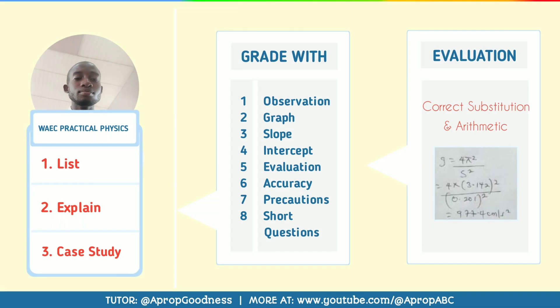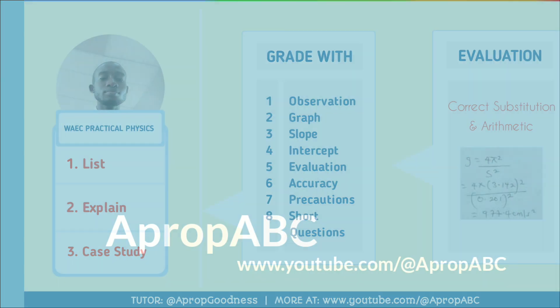The next one is evaluation. In evaluation, they check for correct substitution — when you are evaluating something, they will give a question like 'evaluate this and this,' and you have to substitute a value into it. They check that you substituted values correctly. Then they also check that after substituting correctly, you did the arithmetic correctly as well — how you work out everything after substitution to derive your answer, just like solving something in mathematics. Correct arithmetic and correct substitution will earn you marks for evaluation.